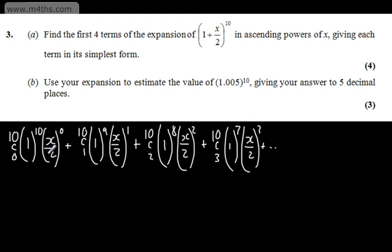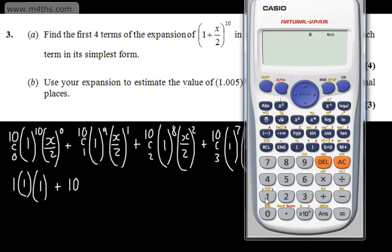So let's go ahead and look at this. 10C0 is 1, so we'll have 1 times by 1. 1 to any power is just going to give us 1, multiplied by x/2 to the 0, which is just 1. 10C1 is going to give us 10. If you're unsure, look on the calculator. 10, then we hit shift, the divide button on 1, that gives us 10. Then we have 1 and then we have x/2.